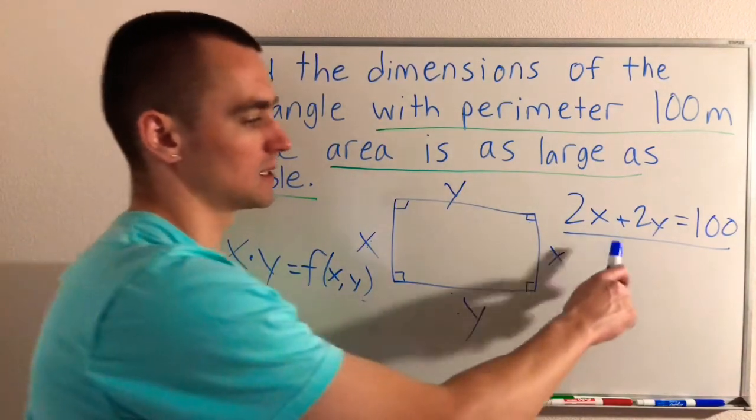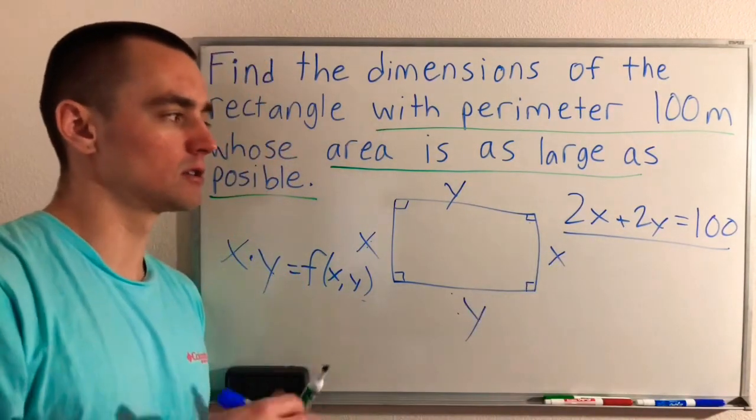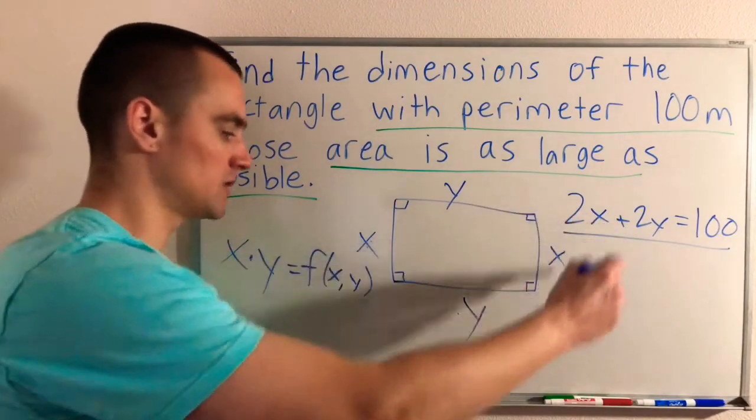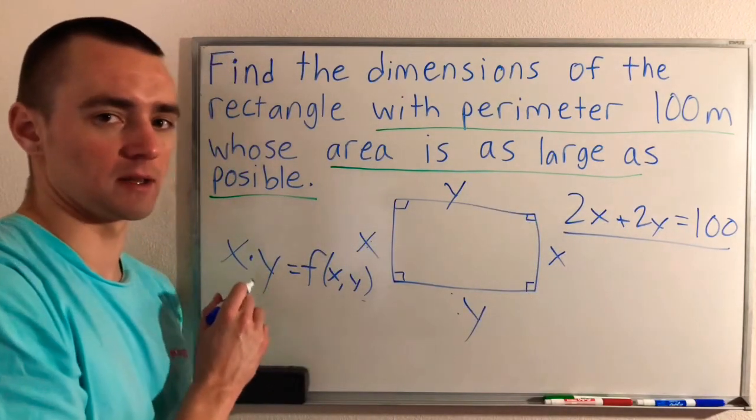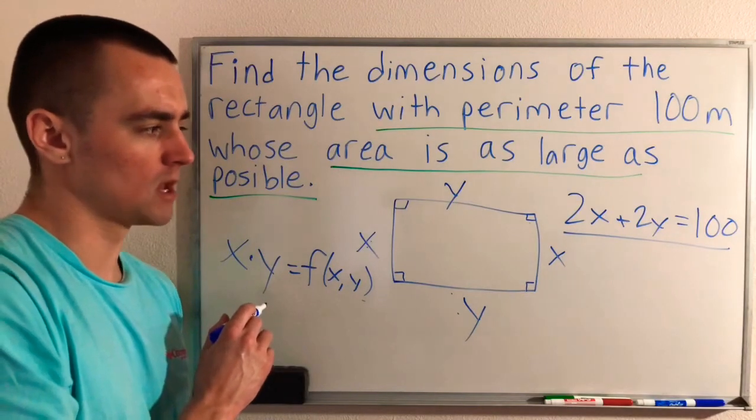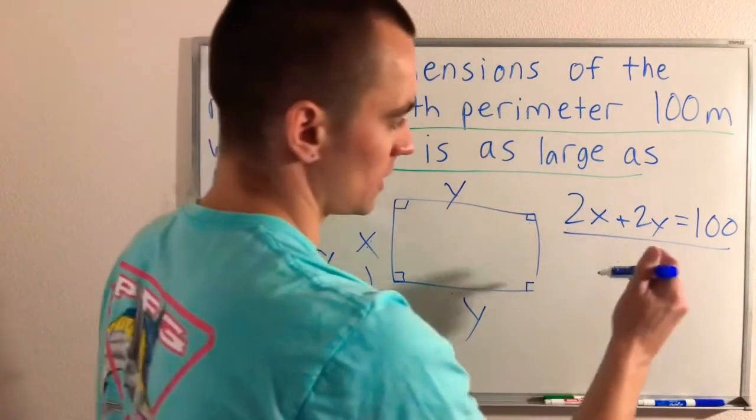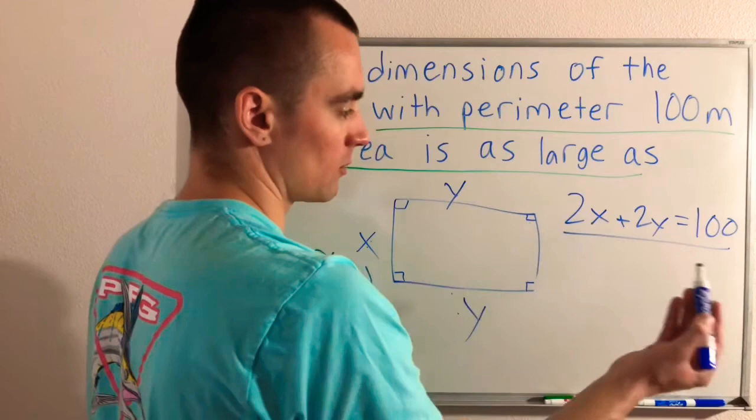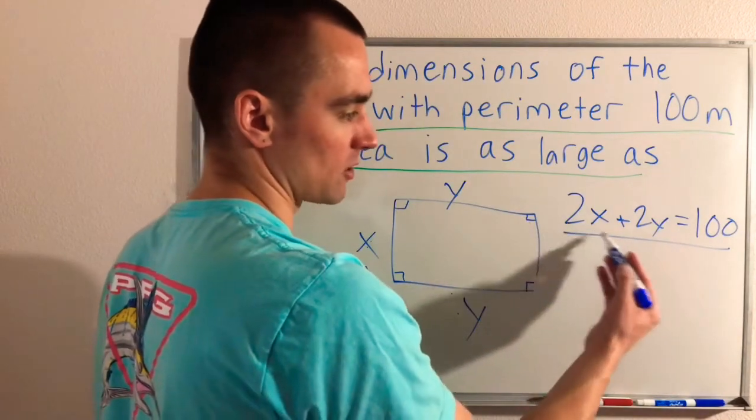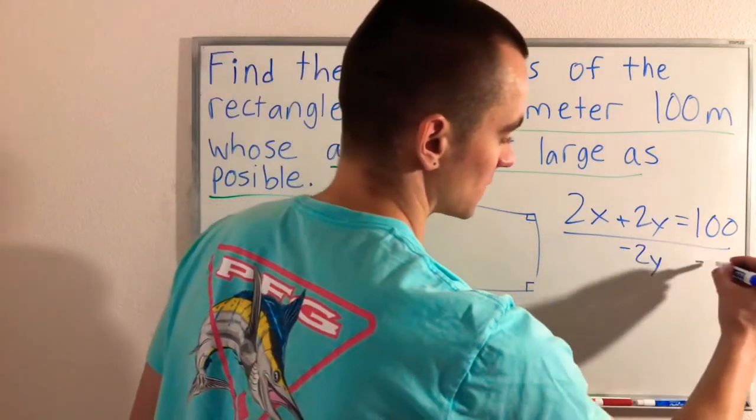So what we can do is use this restriction equation, solve that for one of the variables, and then use that into this equation to make this into a single variable equation. So let me show you what I mean by that. If we just get one variable all by itself, let's just say we want to solve this for X. So we'll subtract 2Y from both sides.